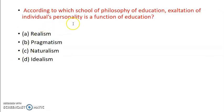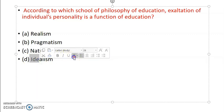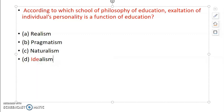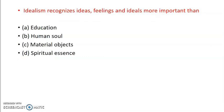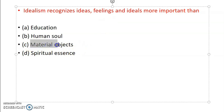According to which school of philosophy of education, exaltation of individual personality is a function of education: Realism, pragmatism, naturalism, idealism? So answer is D, that is idealism. All these questions you need to remember, very important questions, which come in exams every time. Idealism recognizes ideas, feelings and ideals more important than education, human soul, material object or spiritual lessons. Idealism gives more importance to ideas, feelings, and ideals than material objects. Idealism gives us more importance to ideal thought and feelings than material, you have to remember this.